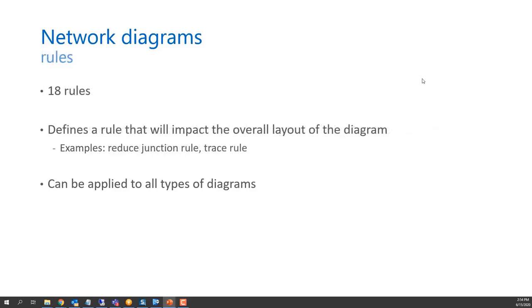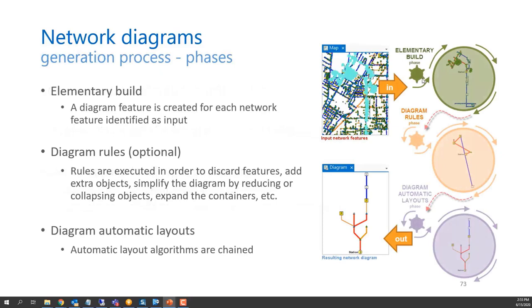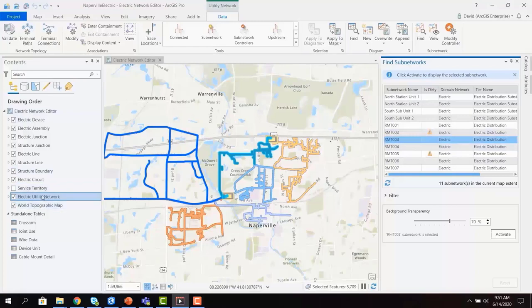Diagram rules — 18 in total — impact the overall layout, such as reduced junction rules or trace rules, allowing fine-grained configuration of automatic diagram layout. Templates can be created and stored within the utility network with a set of rules and layouts. The diagram generation process involves first building the basic diagram, then optionally applying diagram rules in a user-specified order to discard features, add objects, simplify through reduction or collapsing, or expand containers, and finally optionally applying automated layouts.